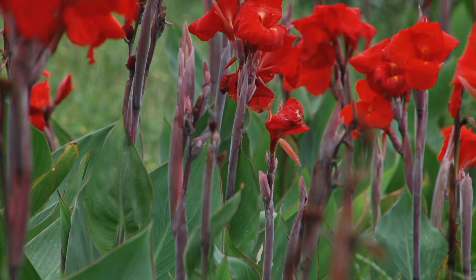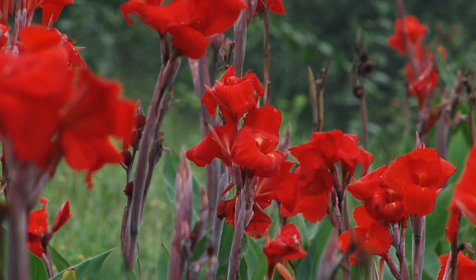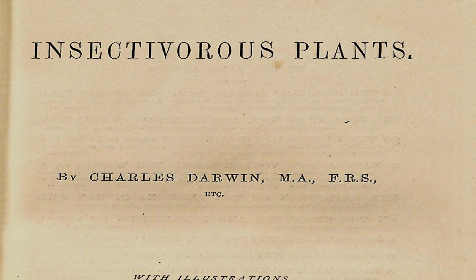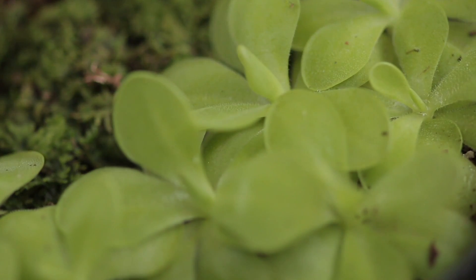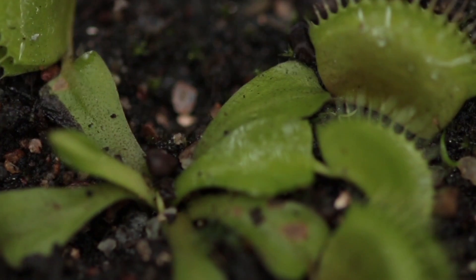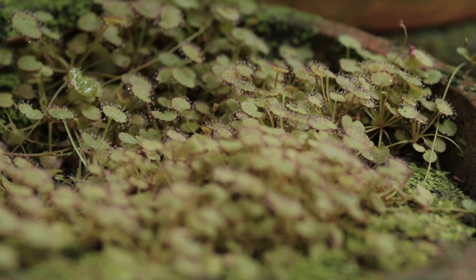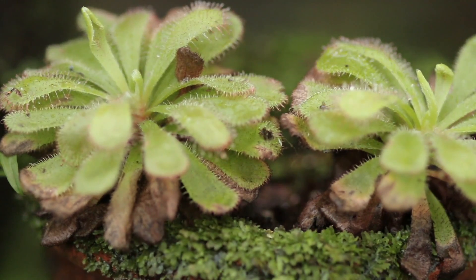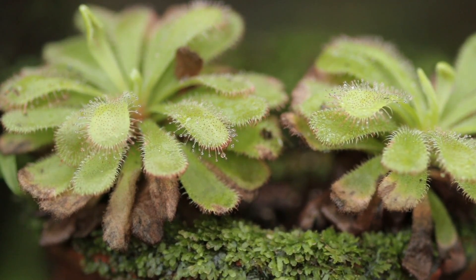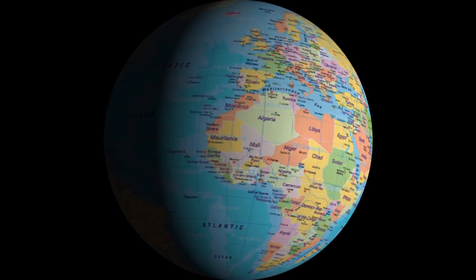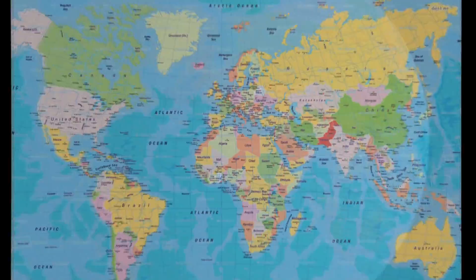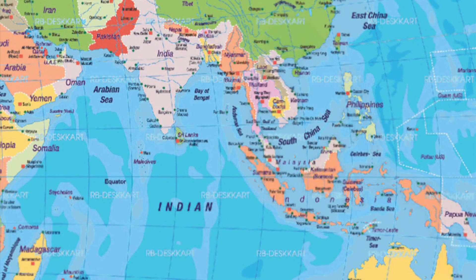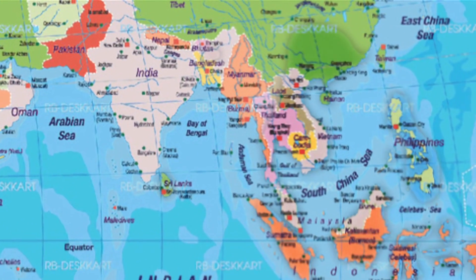Charles Darwin mentioned some of the curious features of plants in his lesser-known work, Insectivorous Plants. There are almost 14 genera of carnivorous plants which have adapted a technique through the extension of their leaves to lure prey. Nepenthes is one among the species of carnivorous plants. Nepenthes Cassiana is one such species found in the Cassie hills of Meghalaya, India.